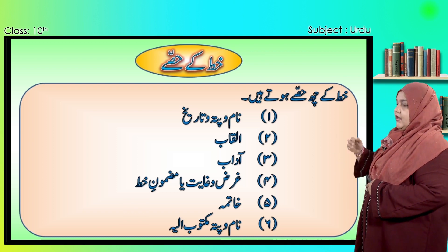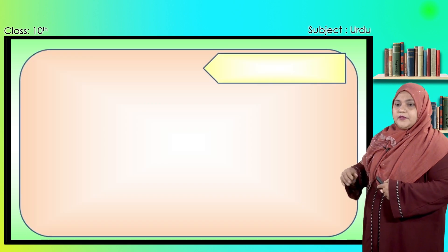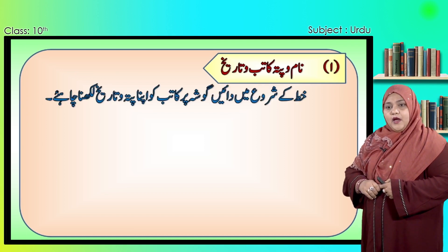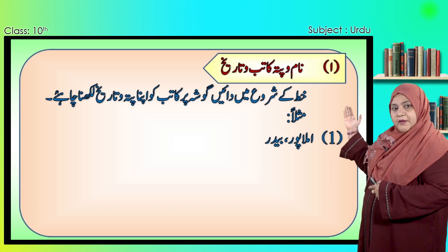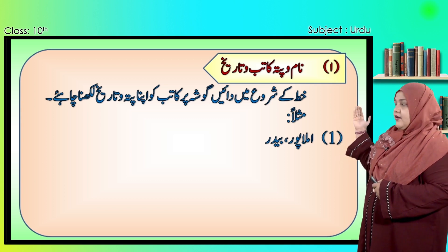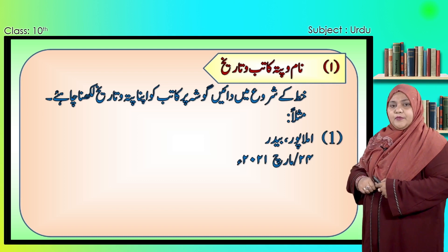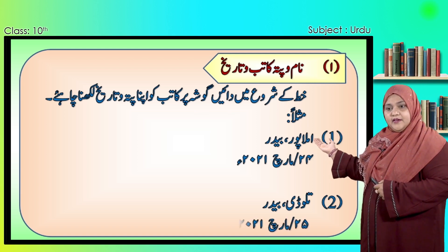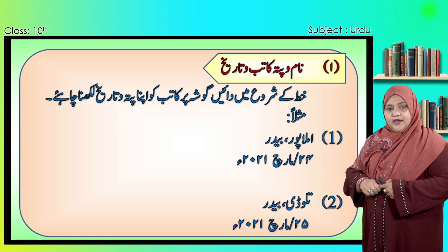چلیے اب ہم دیکھیں گے ان خط کے حصوں کو ہم اپنے خط میں کیسے استعمال کرتے ہیں۔ سب سے پہلے باری آتی ہے نام و پتہ کاتب وہ تاریخ کی۔ خط کے شروع میں دائیں گوشے پر کاتب کو اپنا پتہ و تاریخ لکھنا چاہیے۔ مثلاً آپ نام جو آپ کو دیا گیا ہے سوال میں وہ لکھیں، جیسے امل پور، 24 مارچ 2021، یا پھر تلوڑی بیدر، 25 مارچ 2021۔ اس طرح سے آپ کو اپنا نام اور پتہ اور تاریخ لکھنی ہے خط کے دائیں گوشے میں۔